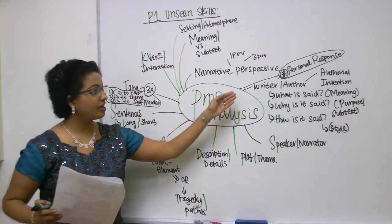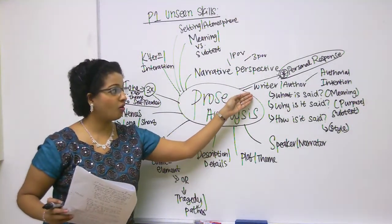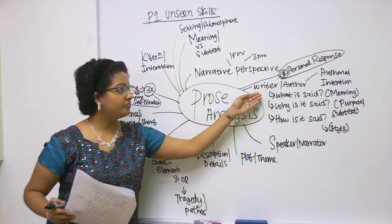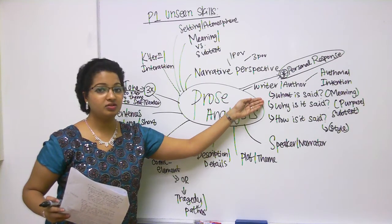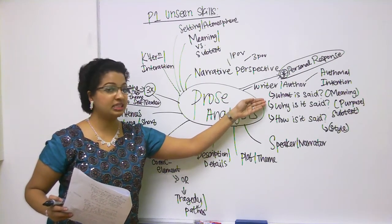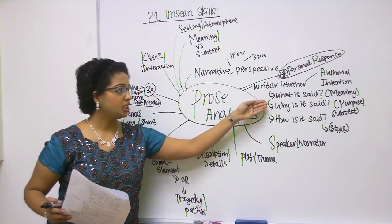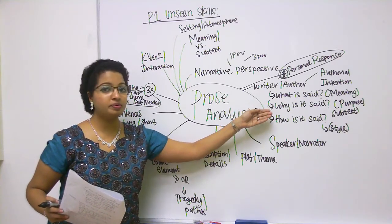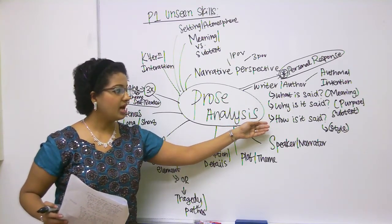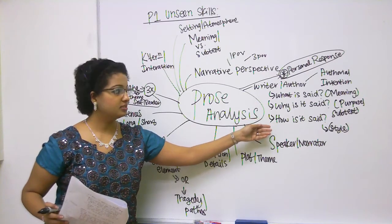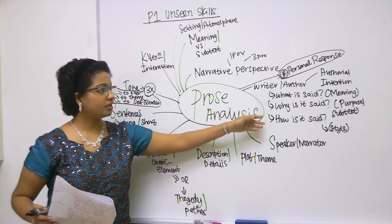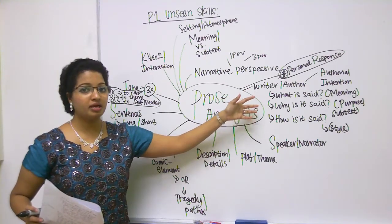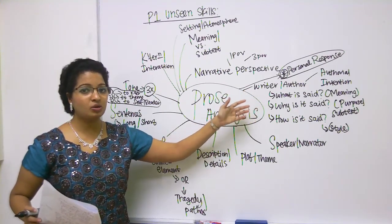One of the first things you would have to look at is the writer or the author — what is the authorial intention or purpose? The first thing is what is said: look at the meaning of that which is said, the themes. Then ask yourself, why is it said — this is the purpose, the authorial purpose. And lastly, how is it said — the style. These three questions lead one to another; you need to handle them in a sequential order.